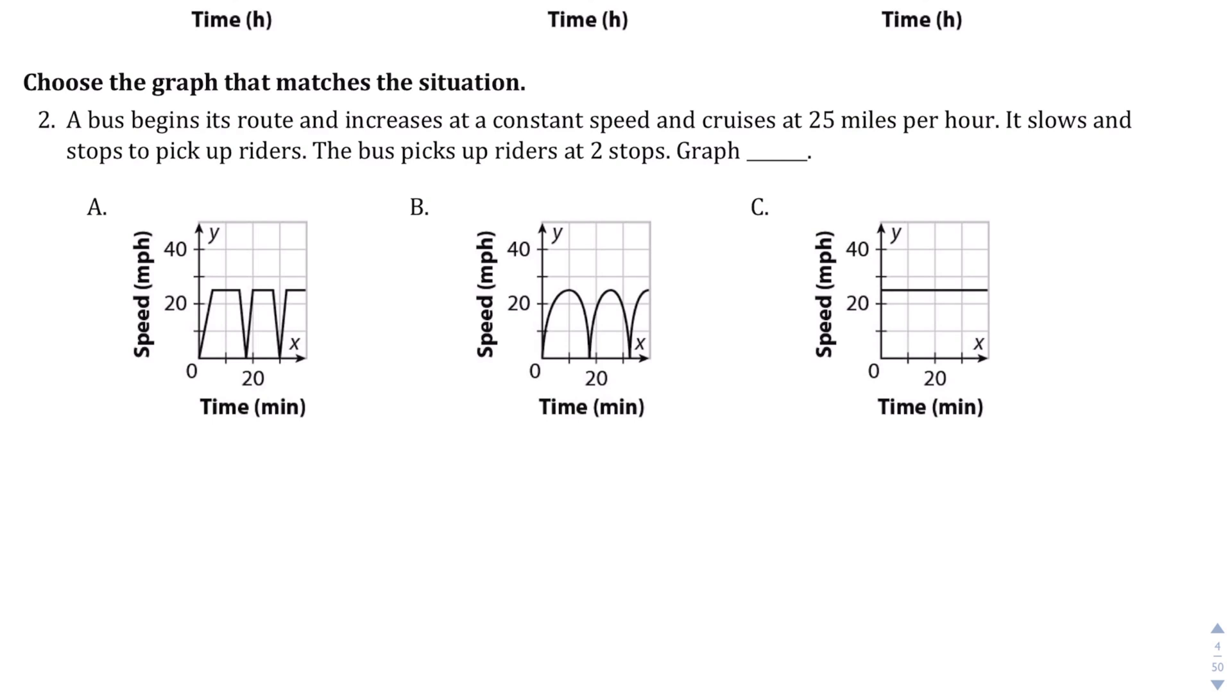The bus begins its route and increases at a constant speed. So it's increasing at a constant speed and cruising at 25 miles per hour. Okay, so that's part one. Maybe I should have done that for the first question.